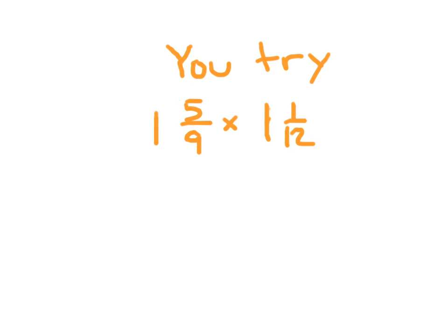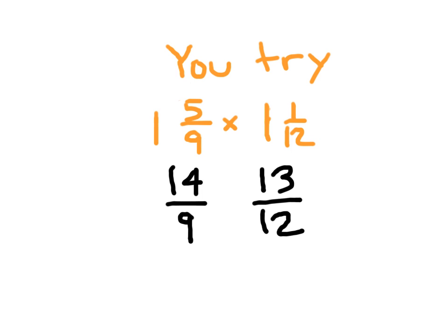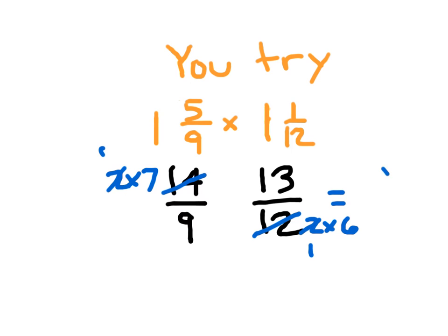All right, here's our solution. For 1 and 5 ninths, did you write 14 ninths as your improper fraction? For 1 and 1 twelfth, did you write 13 twelfths as your improper fraction? Now using a common factors approach, 12 is written as the product of 2 times 6, and 14 is written as the product of 2 times 7. We cancel the common factor of 2. In the numerator, I'm left with 7 times 13, which is 91. And in the denominator, I have 9 times 6, which is 54.